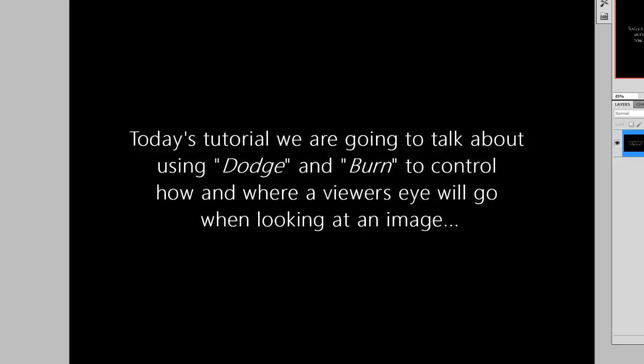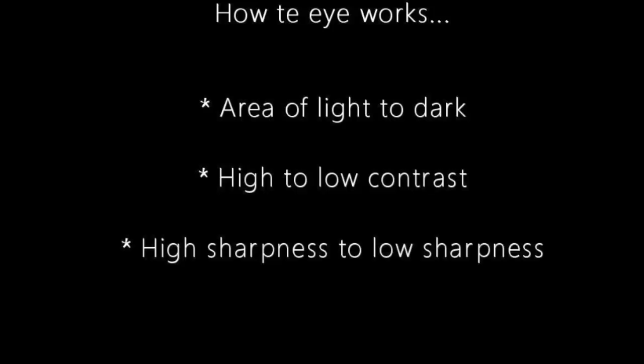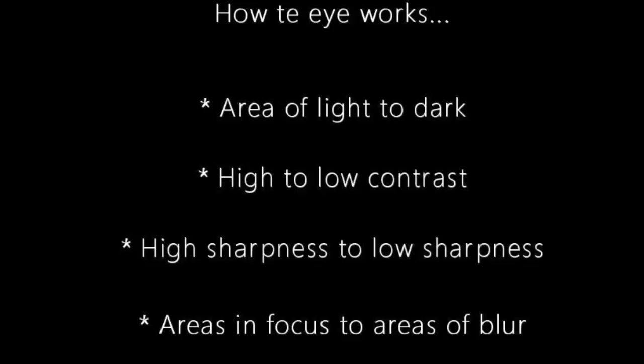In this tutorial we are going to use a little bit of dodging and a little bit of burning to control how and where a viewer's eye will go when looking at one of our images. To do that we first need to understand how the eye works. The eye will first go from an area of light to dark, then it moves from high contrast to low contrast, then high sharpness to low sharpness, and finally from areas in focus to areas of blur.